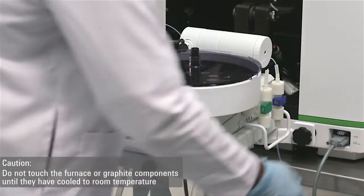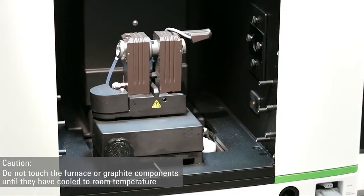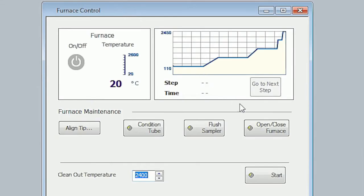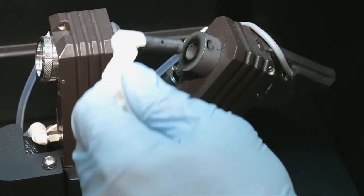Release the auto sampler by undoing the left and right knobs and swing the auto sampler away. To remove the graphite tube, click the open/close button in the furnace control window of the software. Remove the graphite tube.